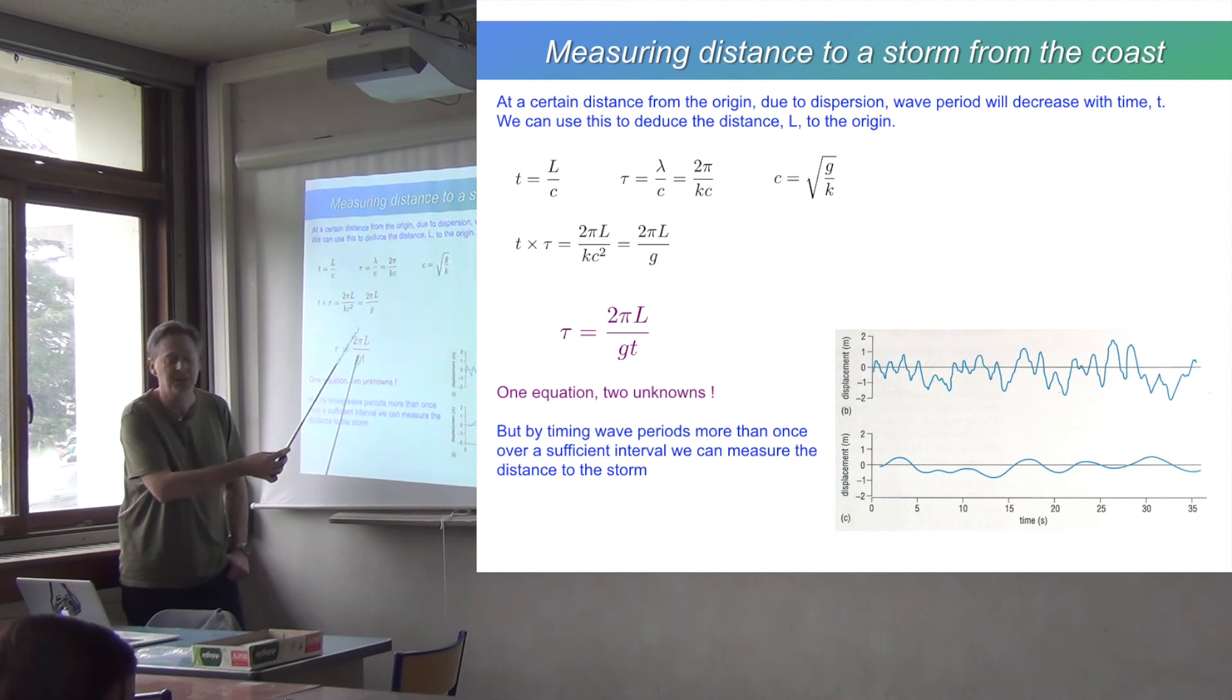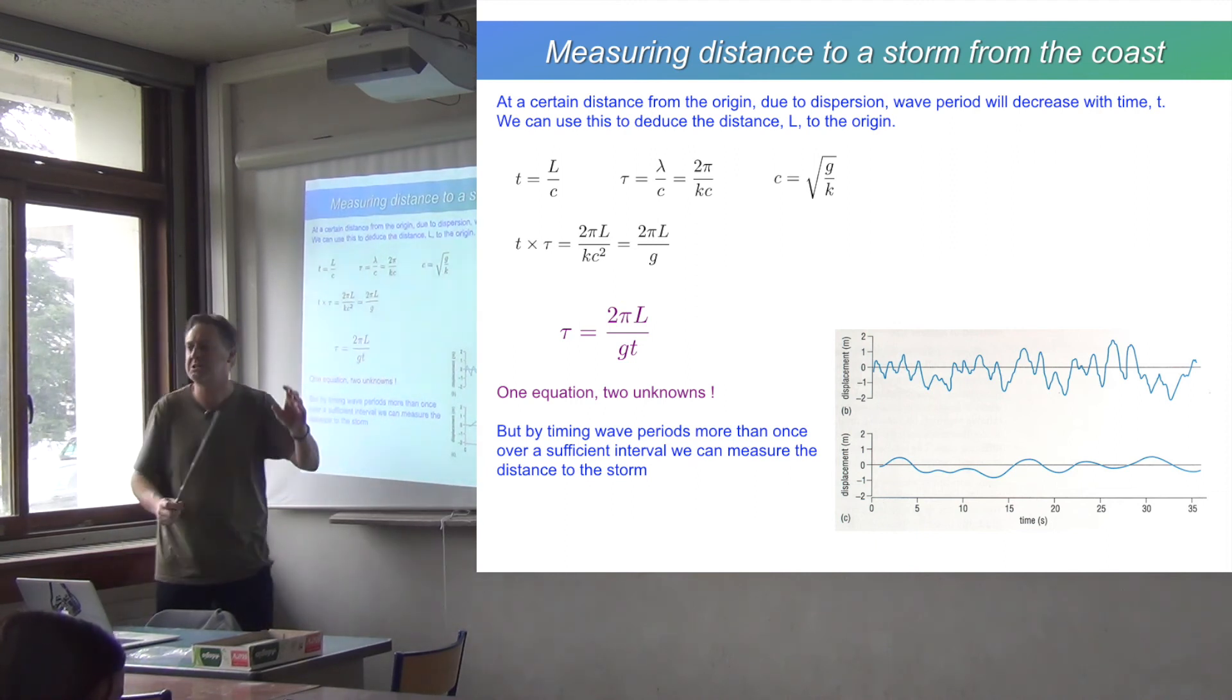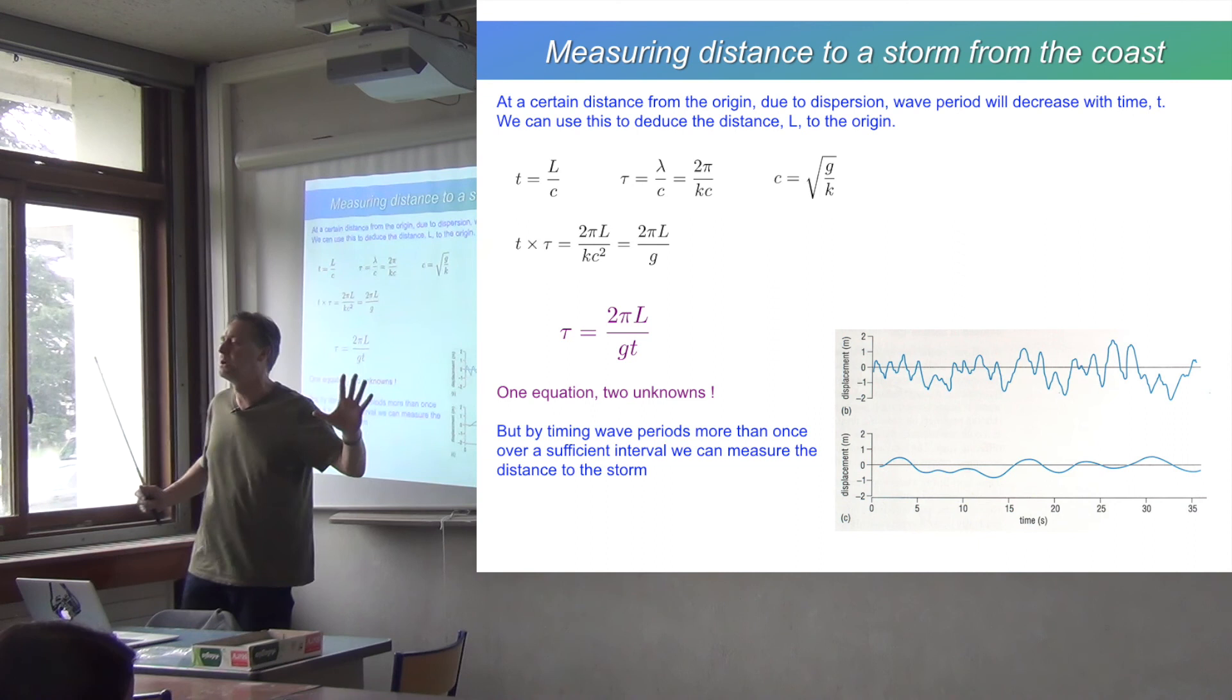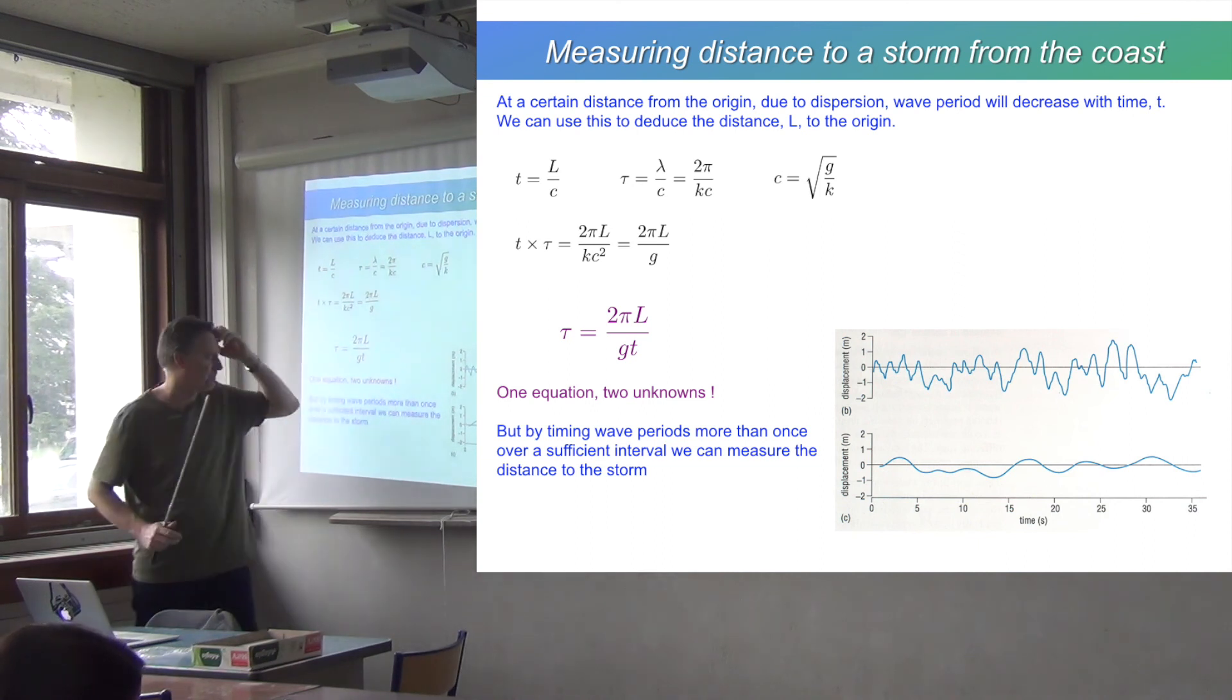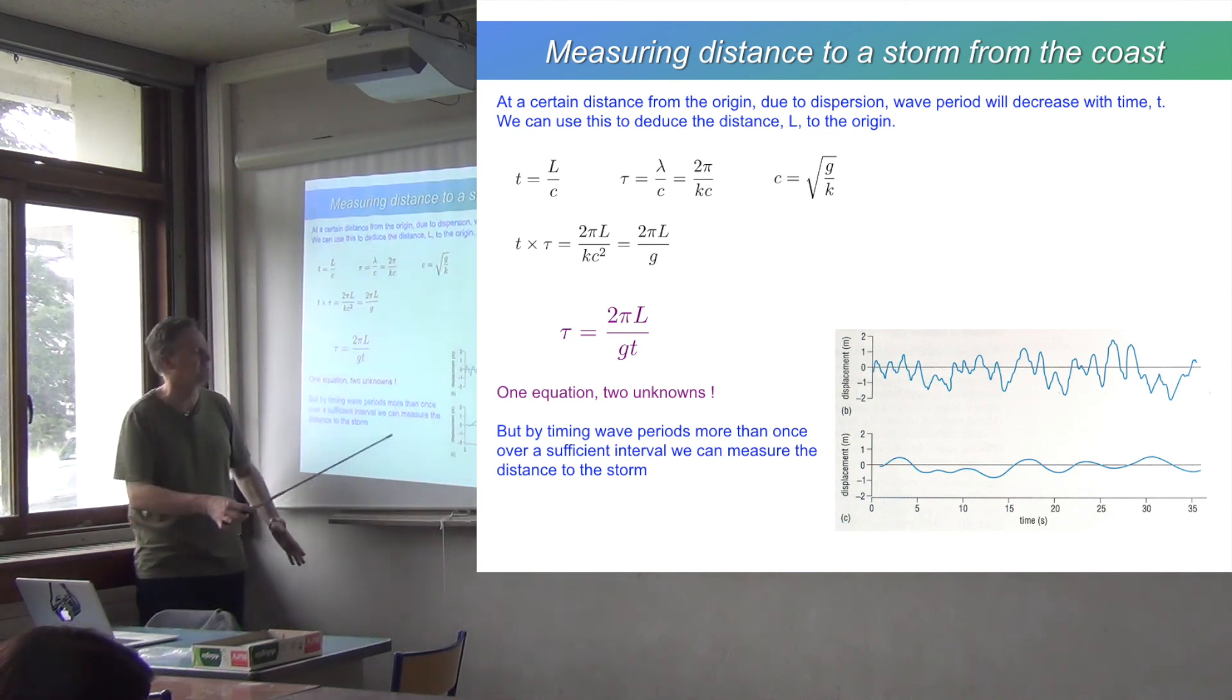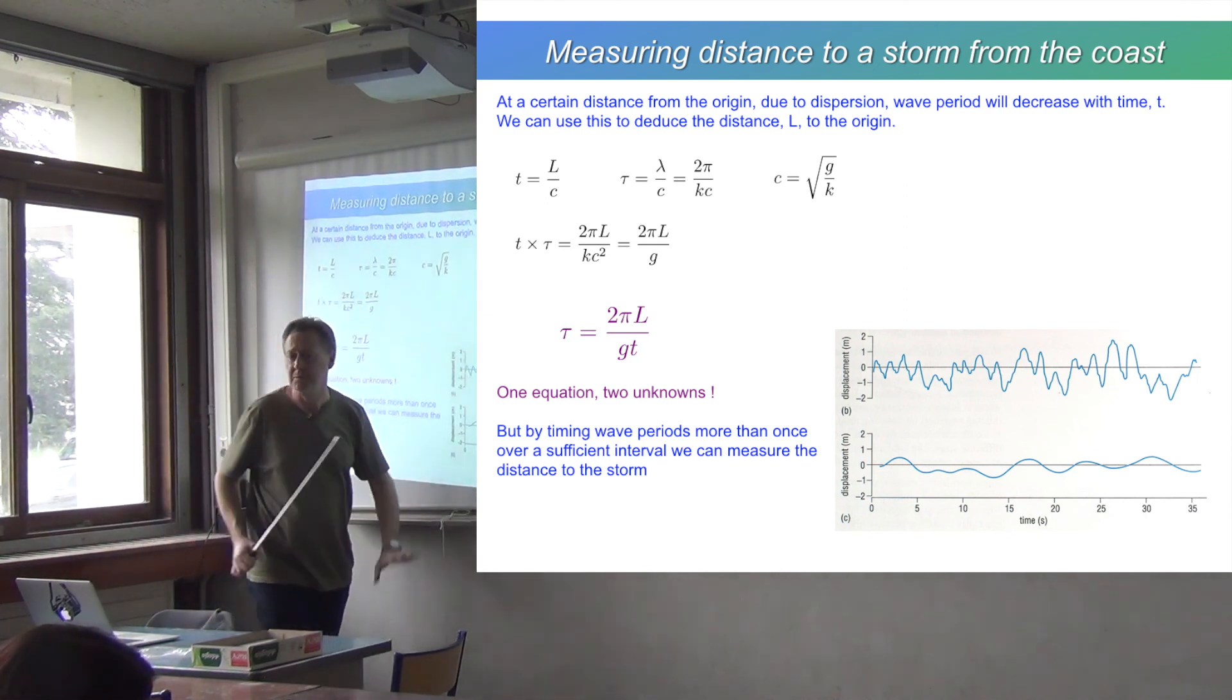The distance to the original perturbation and the time since it happened. We're assuming that the perturbation is some kind of point thing, which happened at a particular point in time at a particular position and then stopped. So you can time the wave periods several times over a sufficient interval, and you can measure the distance to the storm, in principle, of course.